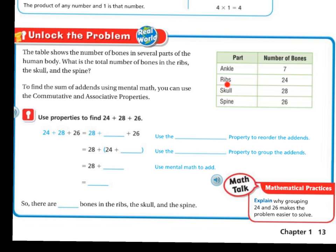So here's our chart that we're going to use. We have our ankle which has seven bones, our ribs which is 24, skull which is 28, and our spine which is 26. So let's use properties to find 24 plus 28 plus 26.